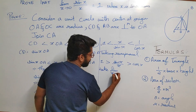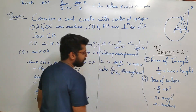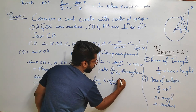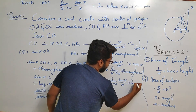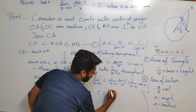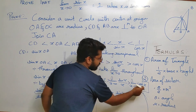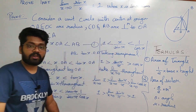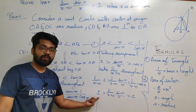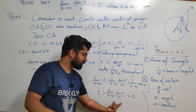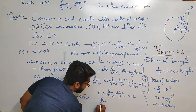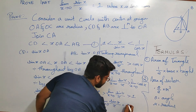Now take the limit as x tending to 0 throughout the equation: limit of 1 is 1, and limit as x→0 of cos x is also 1. So we have: 1 ≥ limit(sin x / x) ≥ 1. Here we apply the Sandwich Theorem, which states that if the lower and upper bounds are both equal, the middle value must equal the same. Therefore, the limit as x tending to 0 of sin x over x equals 1.